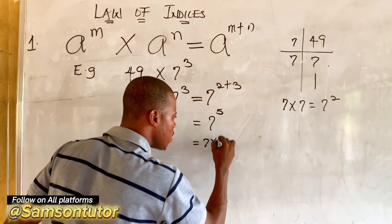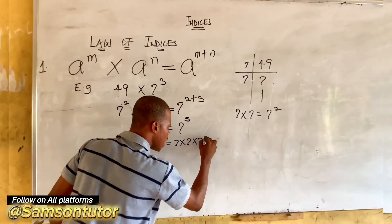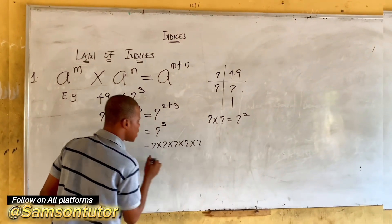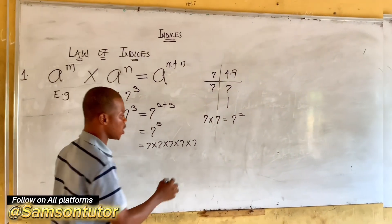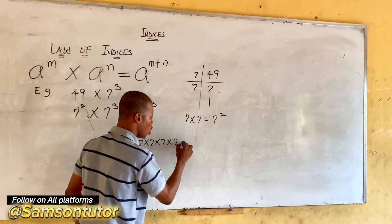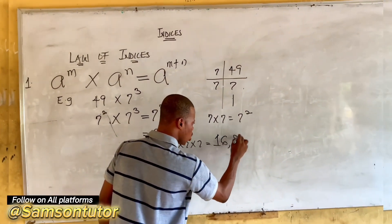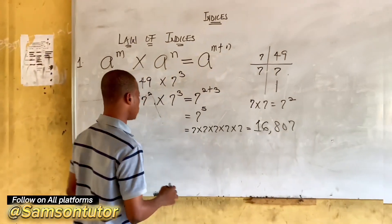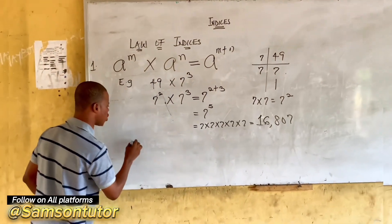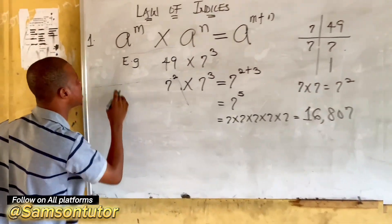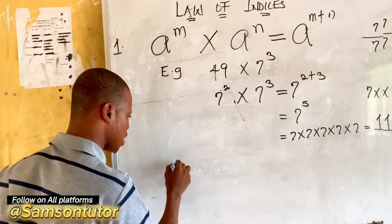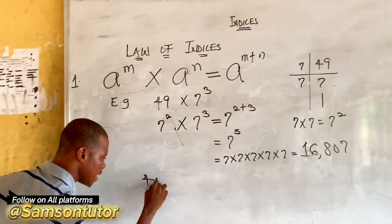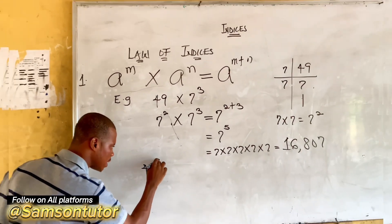Now applying the first law: 7 raised to power 2 times 7 raised to power 3. The bases are the same, so we add the powers: 2 plus 3 equals 5, giving us 7 raised to power 5, which equals 7 × 7 × 7 × 7 × 7 = 16807. Now we move to the second example under the first law.